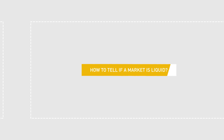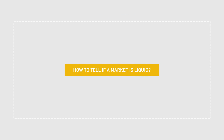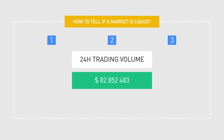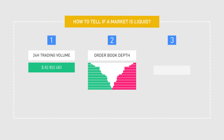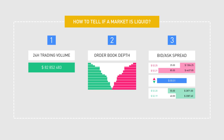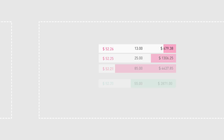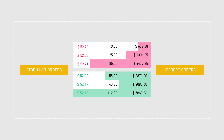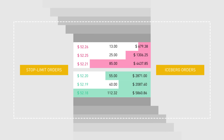When looking to see if a market is liquid or illiquid, it's good practice to look at three important indicators: 24-hour trading volume, order book depth, and the amount by which the ask price exceeds the bid price, also known as the bid-ask spread. However, the order book might not always be an accurate representation due to factors like stop limit orders and iceberg orders, which are created using trade automation and as a result don't always appear on an order book until specific conditions are met for those orders.